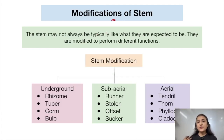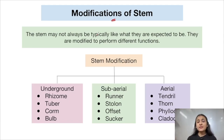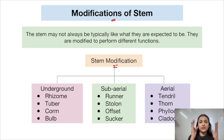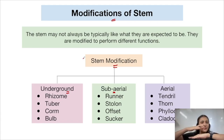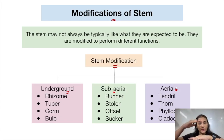Apart from the typical functions of stems — spreading branches bearing fruits, flowers, and leaves, and conduction of water, minerals, and photosynthates — certain plants have stems that have modified themselves to perform different functions. These stem modifications can be categorized into three types: underground stem modifications, sub-aerial stem modifications, and aerial stem modifications.